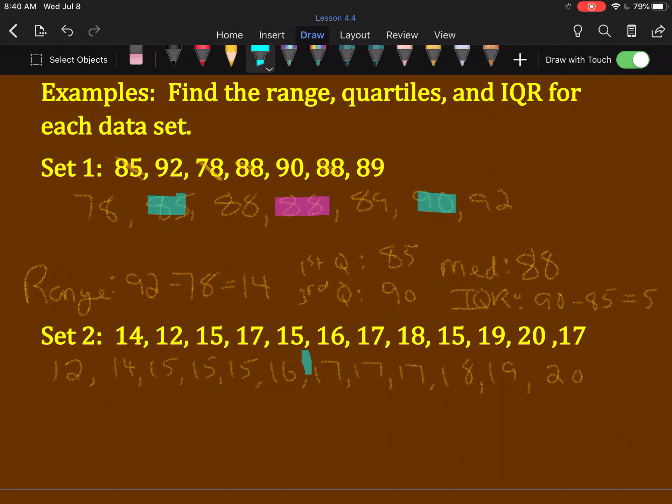That means my median is right here. It's between the 6th and 7th number. That will be important in a minute. First, I should probably do the range, get it out of the way. High is 20, low is 12, 20 take away 12 is 8.